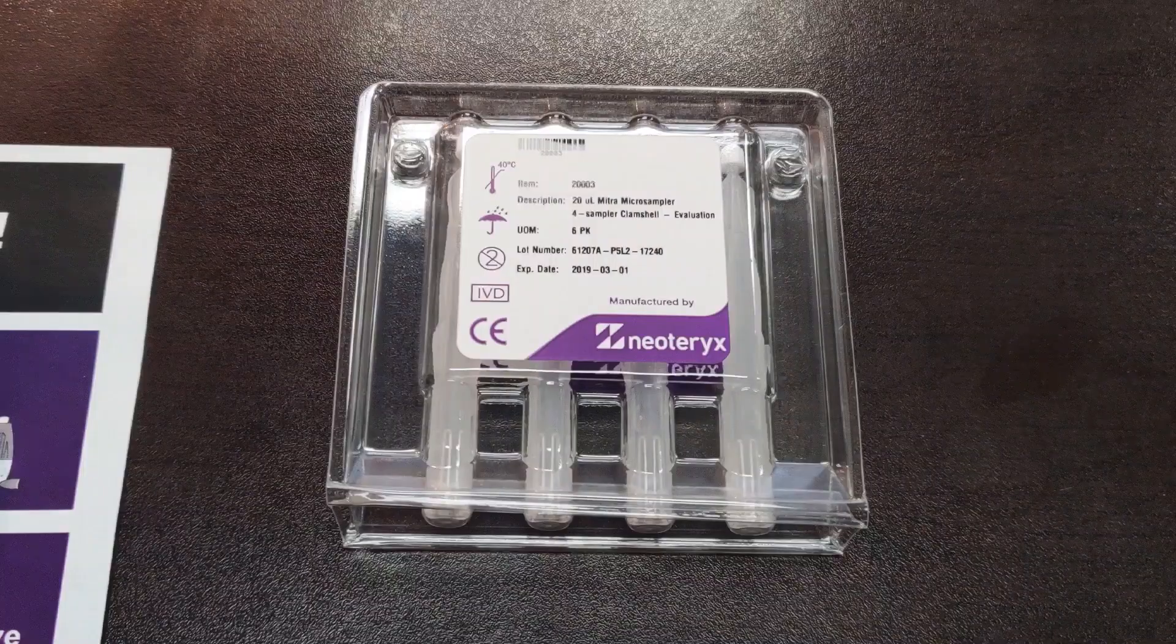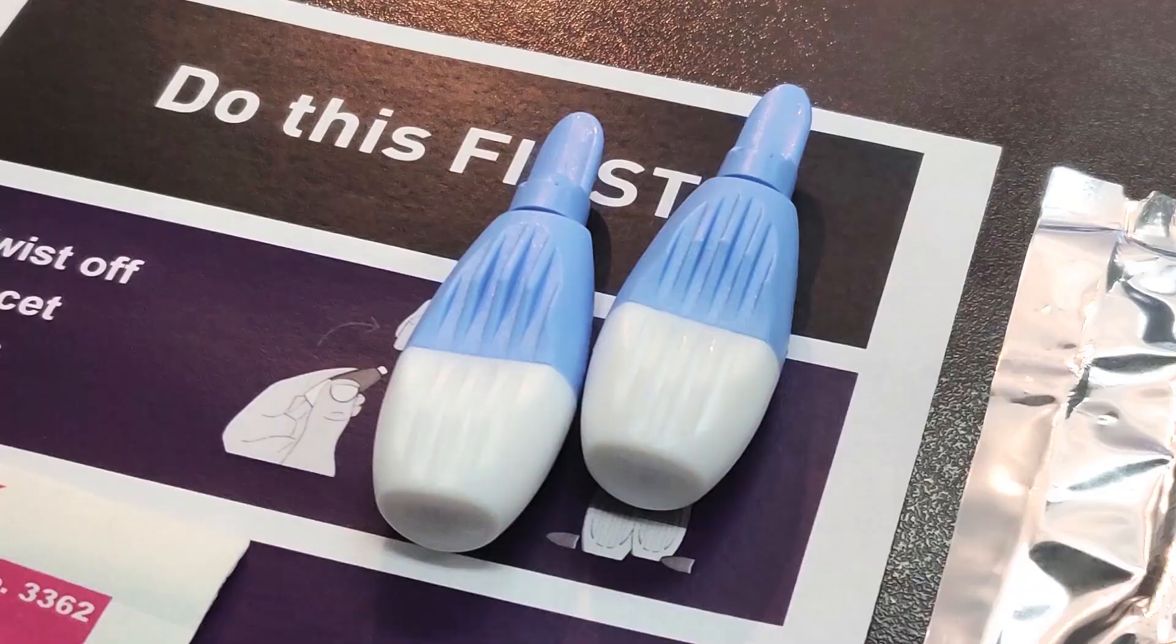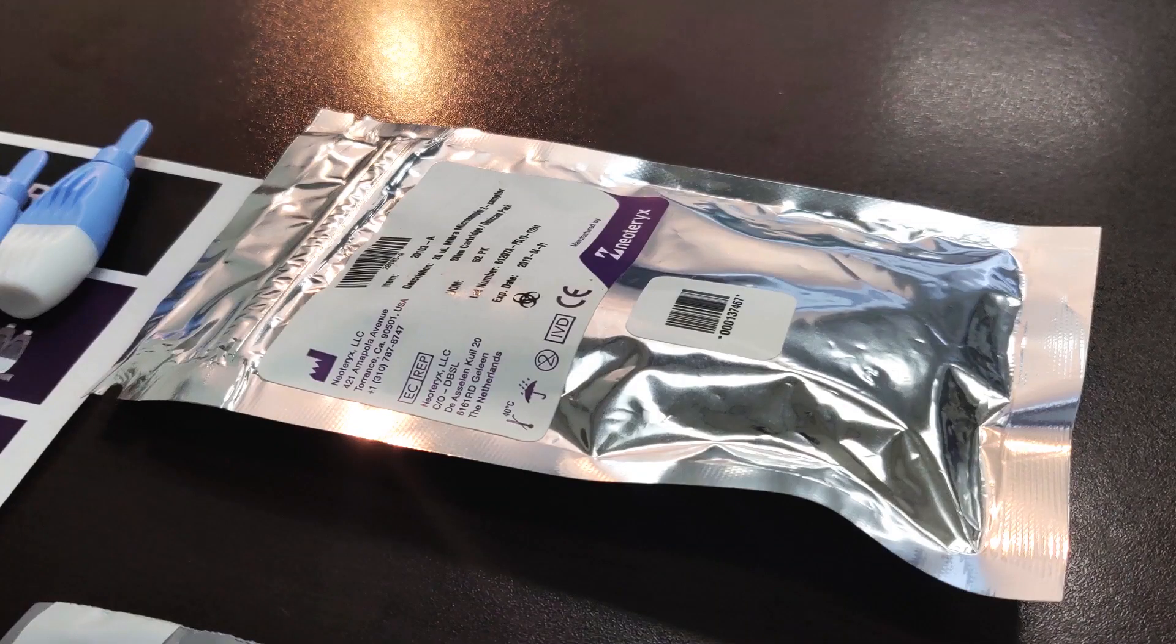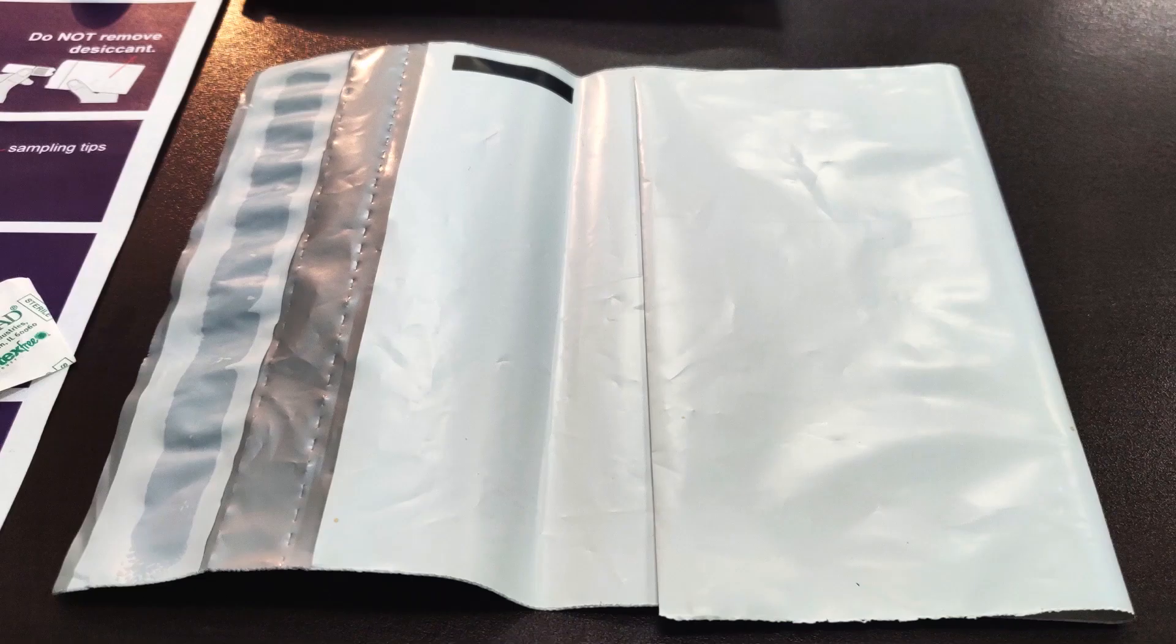The blood collection kit includes either a clamshell or cartridge style meter device configuration, lancets, specimen bag with desiccant, gauze, adhesive bandages, and a shipping envelope.